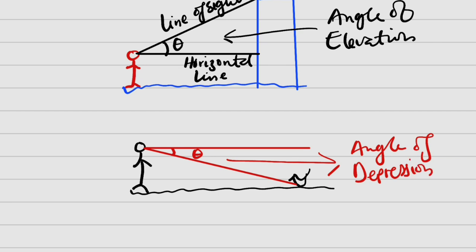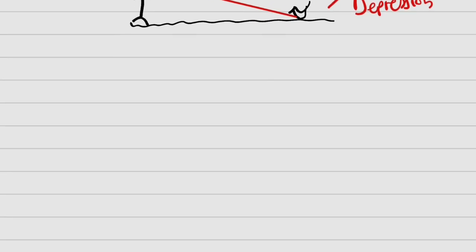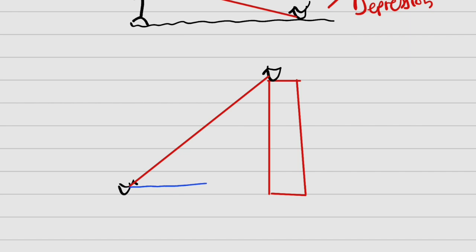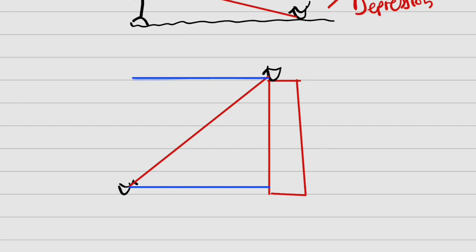One thing you should know in common between these two angles: they are exactly the same. In the same experiment, for example, let's assume that we have a building right here — a block — and it happens that we have two birds, one at the top and one at the bottom, and they are looking at each other. So the bottom one looking up will form an angle of elevation, because we have a horizontal line here. And the top one looking down will form an angle of depression — this is the horizontal line — so this is the angle of depression, while this angle here is the angle of elevation.